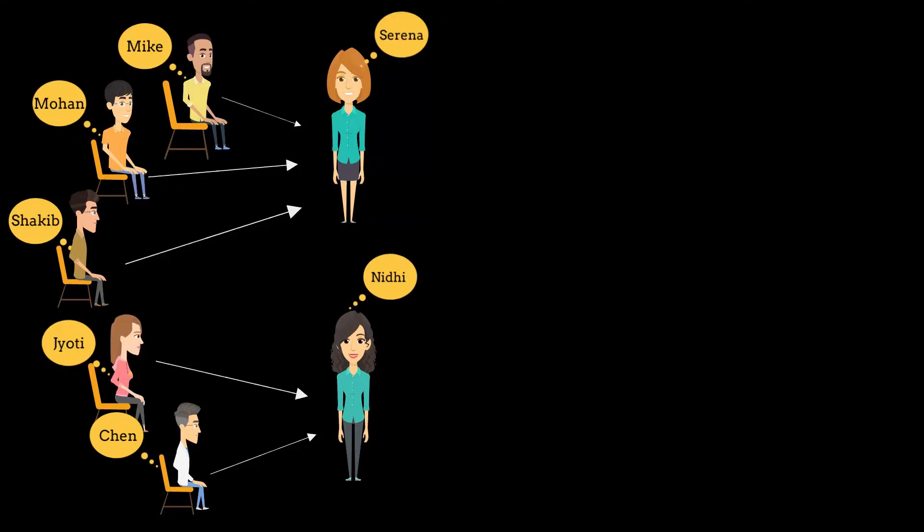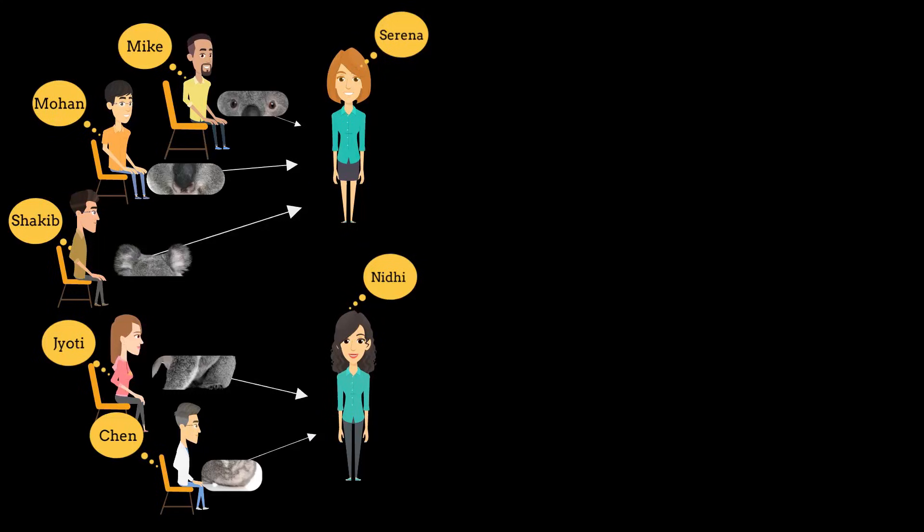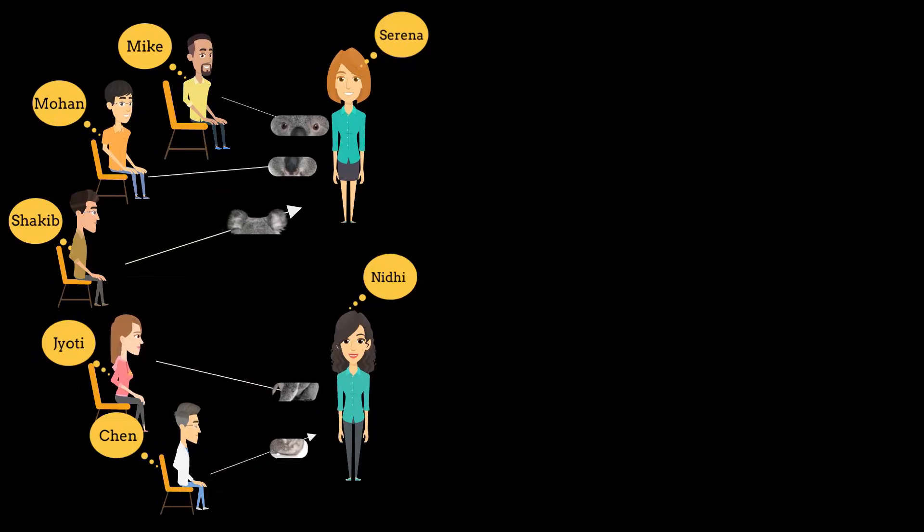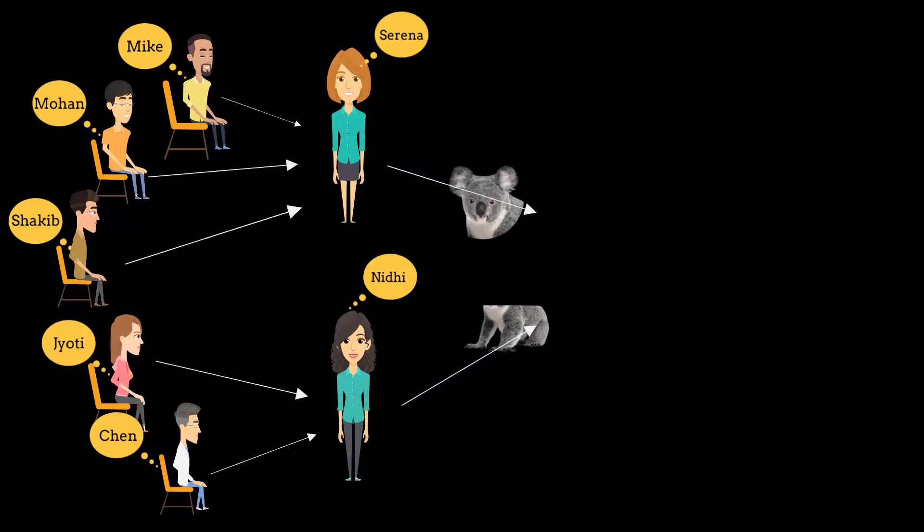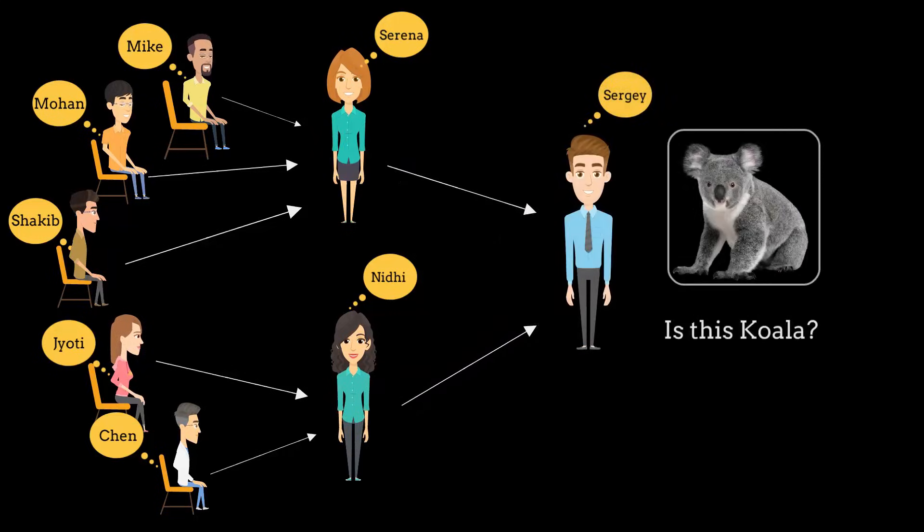You can now use the rest of the group where they work individually. For example, Jyoti can detect legs and Chen can detect tail, and they can tell their decision to Nidhi, whose job is to say whether the image has koala's body or not. And finally, Serena and Nidhi will go to Sergey, who will give the final answer, and he will also use some kind of formula here.